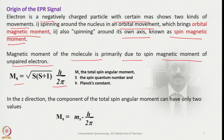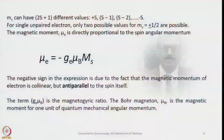Here mₛ is the total spin angular momentum, S is the spin quantum number, and h is Planck's constant. In the z direction, the component of total spin angular momentum can have only two values: mₛ = ±(ms × h/2π). For a single unpaired electron, ms can take only two values: +½ or −½.